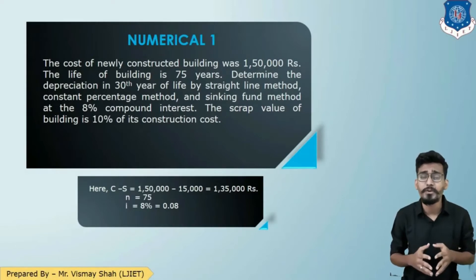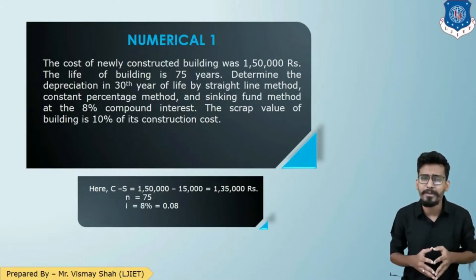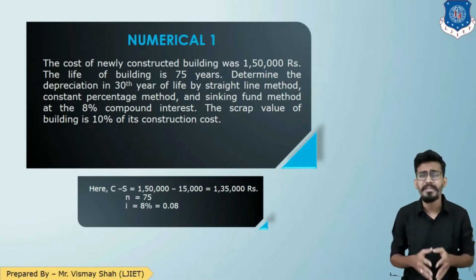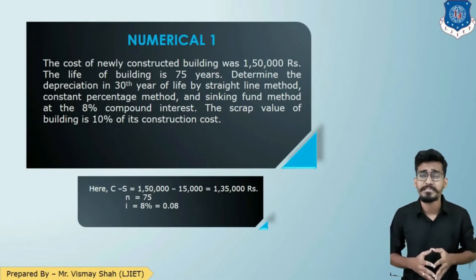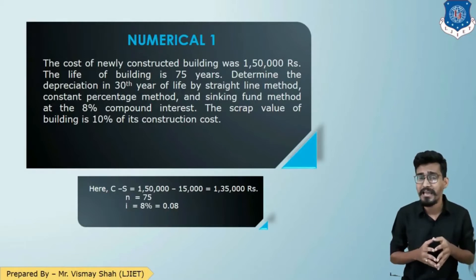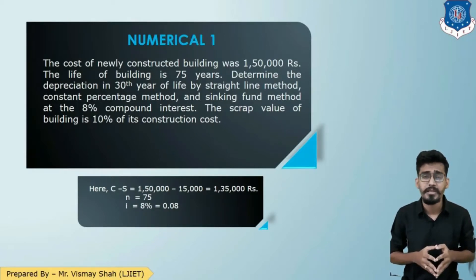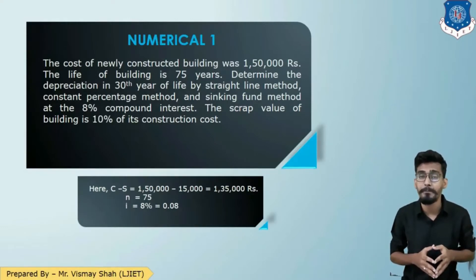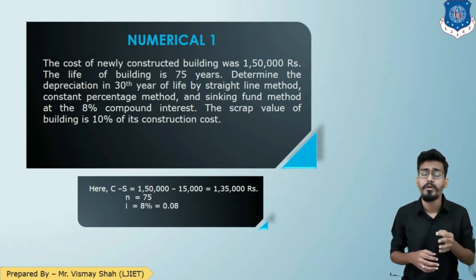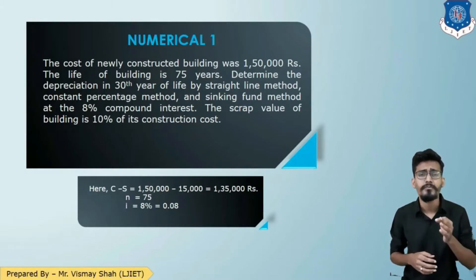The question says: the cost of a newly constructed building is 1,50,000 rupees and the life of the building is 75 years. Determine the depreciation in the 30th year by straight line method, constant percentage method, and sinking fund method. The rate of interest for compound interest is 8% and the scrap value of the property is 10% of its construction cost — that is 15,000 rupees.